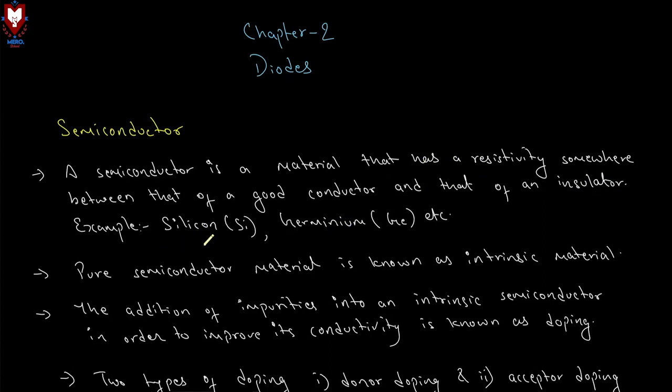For example, silicon or germanium. A pure semiconductor material is known as intrinsic material.